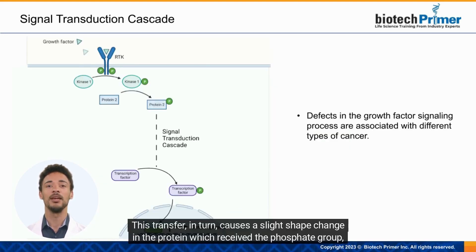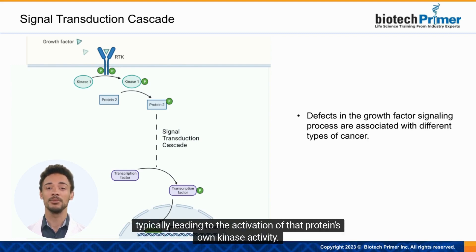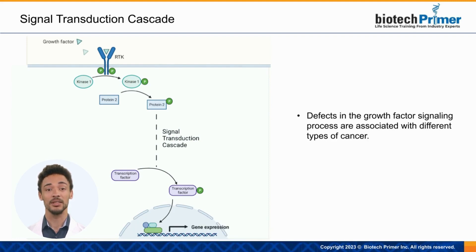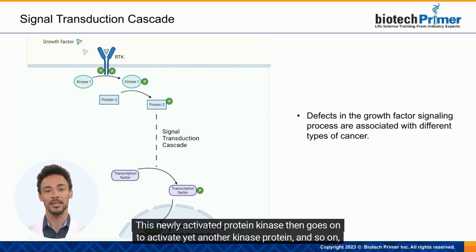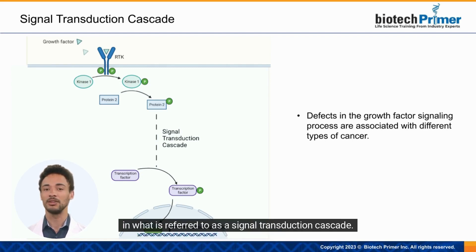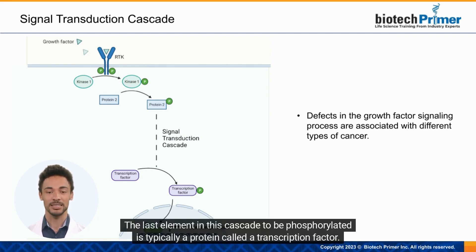This transfer, in turn, causes a slight shape change in the protein which received the phosphate group, typically leading to the activation of that protein's own kinase activity. This newly activated protein kinase then goes on to activate yet another kinase protein, and so on, in what is referred to as a signal transduction cascade. The last element in this cascade to be phosphorylated is typically a protein called a transcription factor.